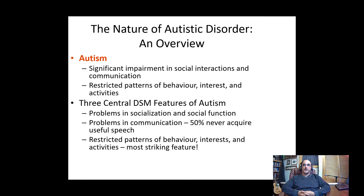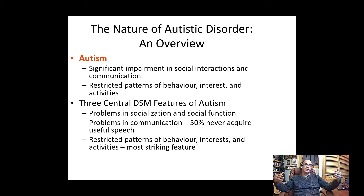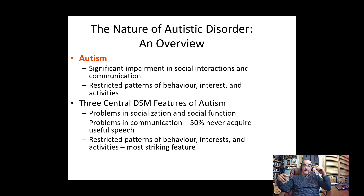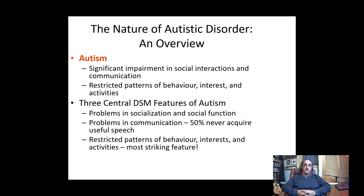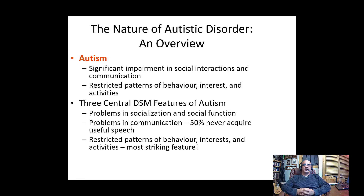People with autism also have restricted patterns of behavior, interest, and activities. Layered on top of social and communication difficulties, these restricted patterns may include very specific ways people with autism want things to look or not look. They may have highly focused interests that are very much centered on the individual, which may not be age-appropriate.